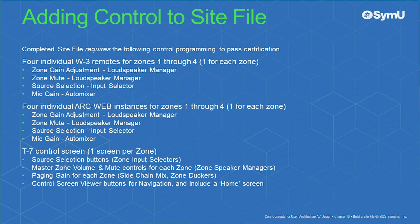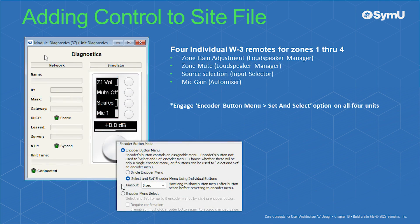Finally, you'll need to add four T7 control screens, one for each zone. Each screen will have zone gain adjustment and zone mute from the loudspeaker manager, source selection using the mono input selector, paging gain for each zone via the side chain mix in the zone ducker modules, and control screen viewer buttons for navigation between the four zone control screens, including a basic home screen. Each zone's W3 remote should be unique and only include zone volume and zone mute control for that particular zone, source selection for that particular zone, and microphone gain for that particular zone. It is helpful to note that the individual zones will be in order of the microphone channels: zone 1, mic 1; zone 2, mic 2, and so on.